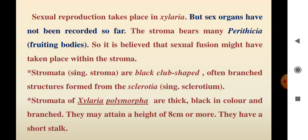The stromata are black, club-shaped, often branched structures formed from the sclerotia. The stroma are polymorphous, thick, black in color, and branched. They may attain a height of 8 cm or more.